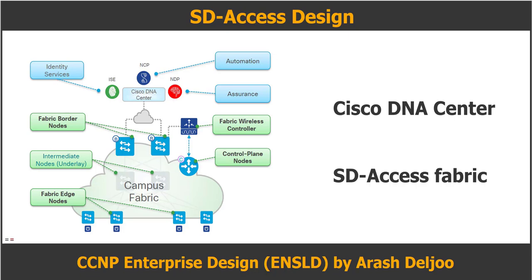Let me review the SD Access architecture. Cisco Software Defined Access, or SD Access, is an intent-based networking solution for the enterprise built on the foundation of Cisco Digital Network Architecture, or DNA. The SD Access solution provides automated end-to-end segmentation for users and devices from the edge of the network to applications. SD Access leverages Cisco DNA Center to provide design settings, policy definition, and automated provisioning of network devices, along with assurance analytics for both wired and wireless networks.